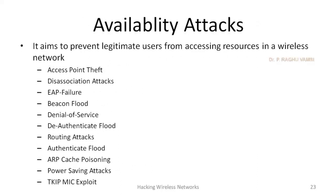Availability attacks aim to prevent legitimate users from accessing resources in a wireless network. These include access point theft (physical theft), disassociation attacks, EAP failure attacks, and beacon flood attacks. In beacon flooding, the attacker floods hello packets so the access point has no time to respond, leading to denial of service. Other availability attacks include de-authentication flood, routing attacks, authentication flood, ARP cache poisoning, power-saving attacks, and TKIP MIC exploits.